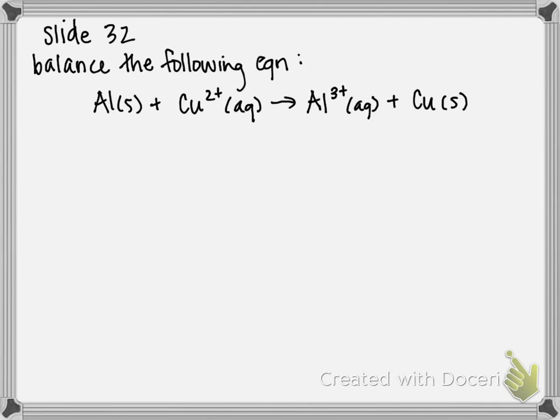It says to balance the following equation, where we have aluminum plus copper 2+ gives you aluminum 3+ and copper. So first step in this, and for this equation it's relatively easy to see, is to write down the oxidation numbers. So eventually we can split these into two half-reactions, an oxidation half-reaction and a reduction half-reaction. So for aluminum by itself as a solid, it's zero.